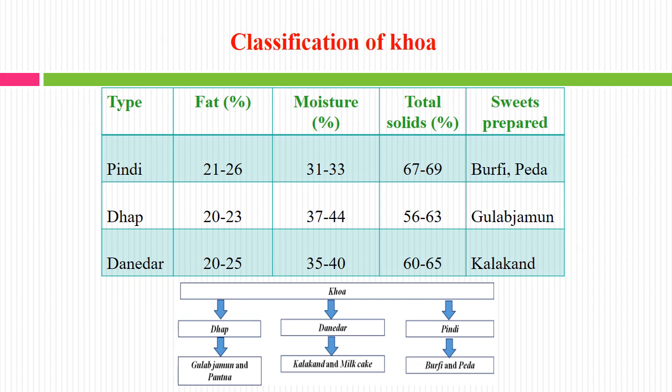Now we will see the classification of Khoa. Basically we can find three different types: Pindi, Dhaap and Dhanedhar. In case of Pindi, the moisture content is comparatively less so total solid is more, and it will have a fat percent of 21 to 26%. It is used for making Khoa-based sweets like barfi and peda, which are very common and popular in most parts of India.